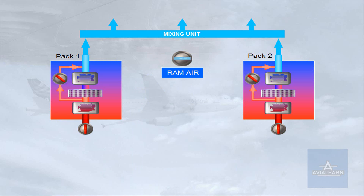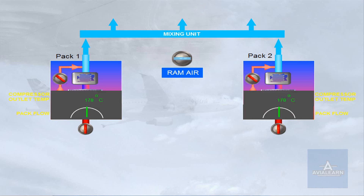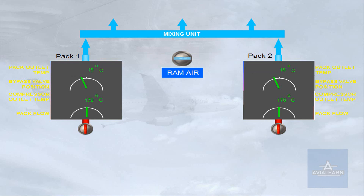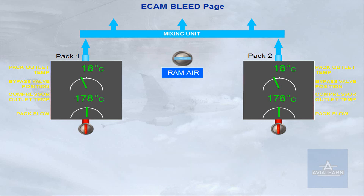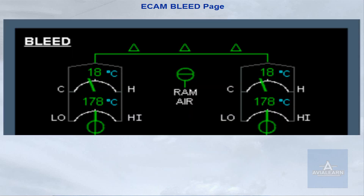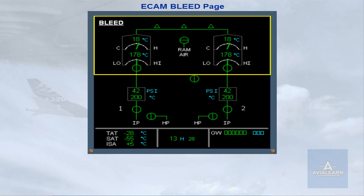Various pack parameters are monitored by ECAM: pack flow, compressor outlet temperature, bypass valve position, and pack outlet temperature. These parameters, along with the valve positions, are displayed on the upper part of the ECAM bleed page.